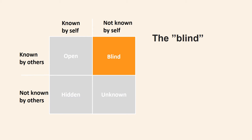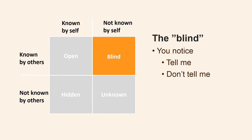The blind quadrant represents things that you know about me but that I am unaware of. You may notice that my eye contact seems to be lacking in our ongoing conversation, or that I am interrupting you mid-sentence. It's a bad habit from my side which makes communication between us difficult. If you choose to tell me, it becomes part of the open quadrant and the window shade moves to the right. But if you don't say anything, it remains unknown to me and stays as a part of my blind quadrant — you know it and I do not.